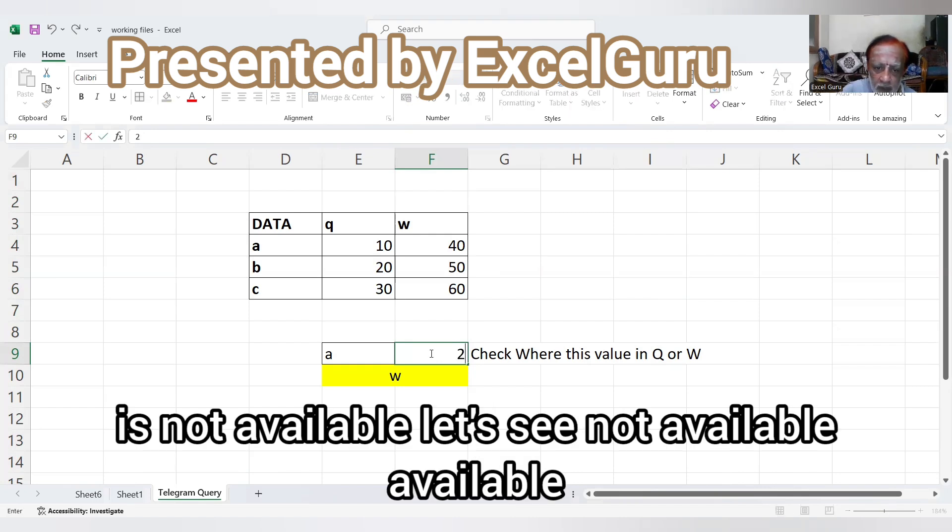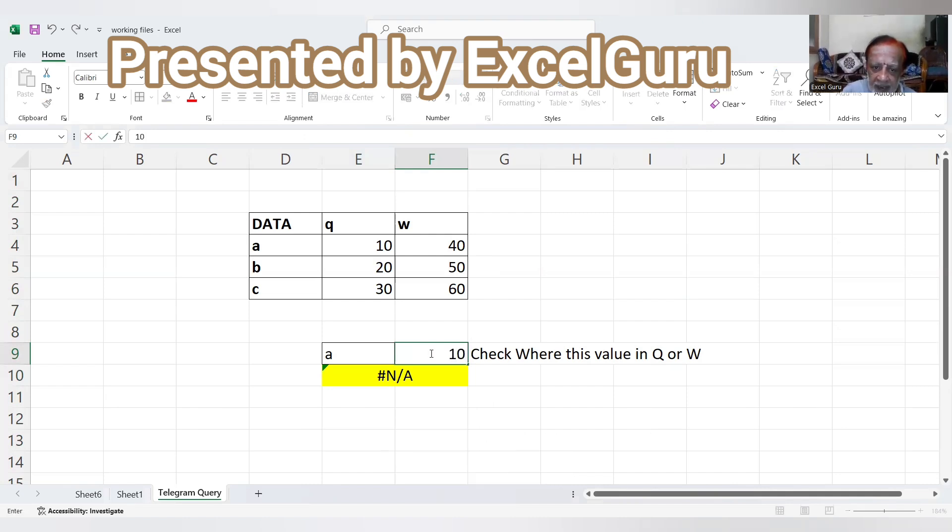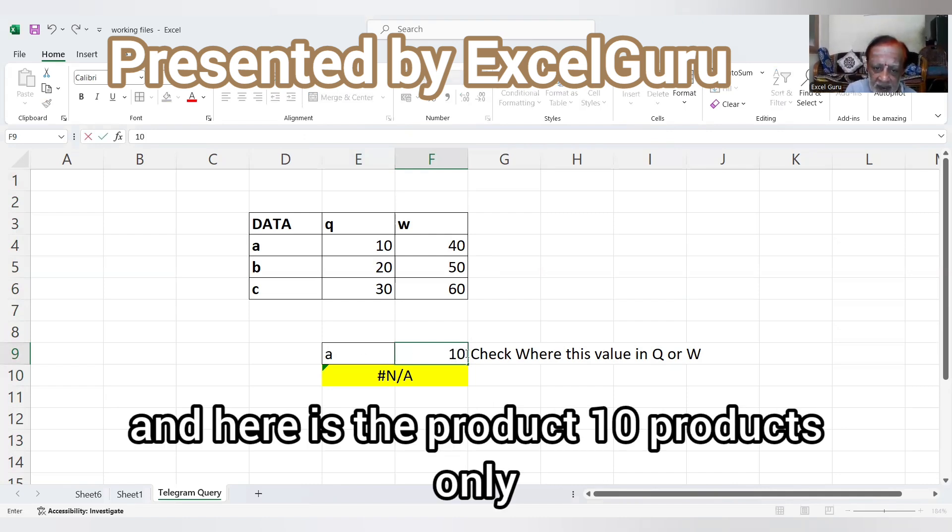If I enter 20 over here, 20 is not available. Let's see. Now it's available. Here is the city and here is the product, 10 products only.